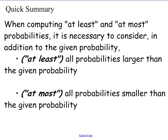So here is a little quick summary. When computing at least and at most probabilities, it is necessary to consider in addition to the given probability. So when it says at least all probabilities larger than the given probability. So that's why, for example 1, we considered the given probability. So that was 2. And then we have to consider all probabilities larger than the given probability. And that was when r equals 3.